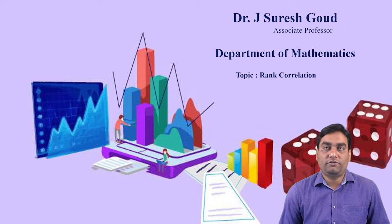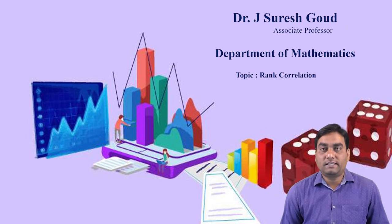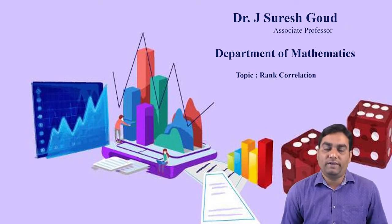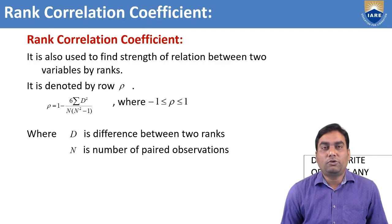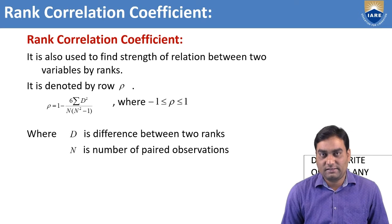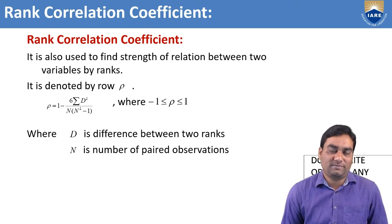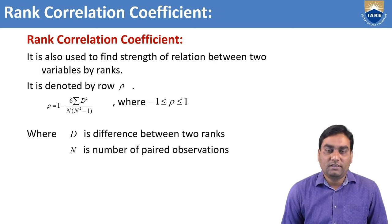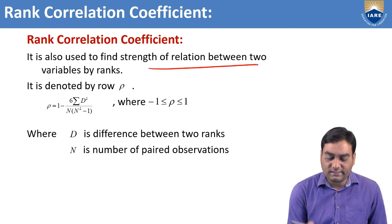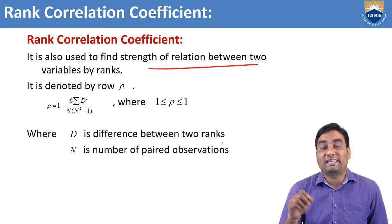What is the meaning of rank correlation? In the previous session, we discussed correlation — the relation between variables. Rank correlation means finding the relation between variables by using ranks. This is also used to find the strength of relation between two variables by using the ranks.